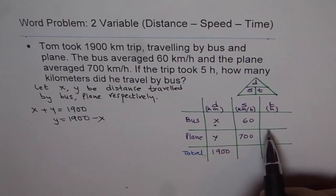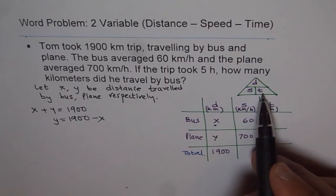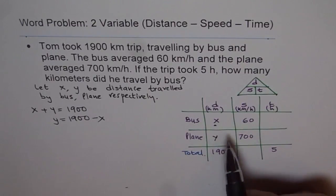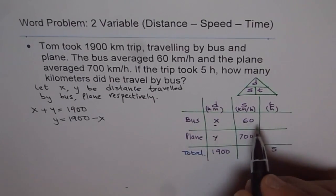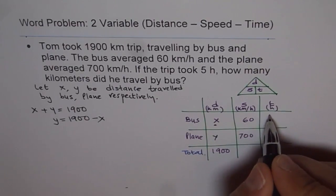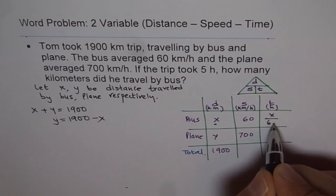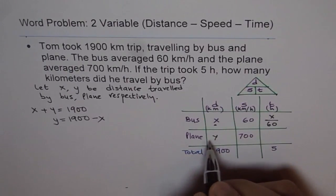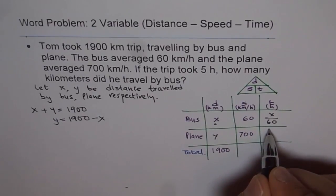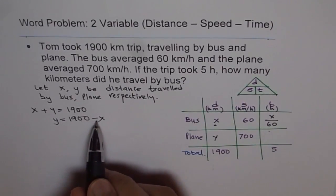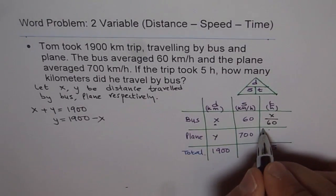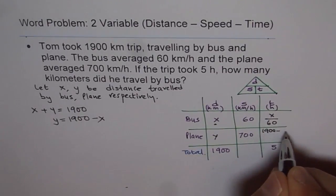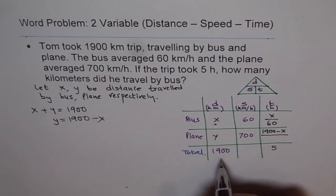Now, time. From this relation, we know time is distance divided by speed. So time taken during this trip by bus will be distance of X divided by speed, which is 60. How about plane? Distance of Y, and Y for us is 1900 minus X. So instead of Y, I will write 1900 minus X. So we have 1900 minus X, total was 1900, so Y is 1900 minus X divided by the speed of 700.